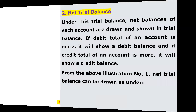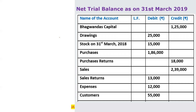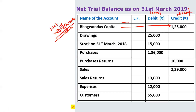In the net trial balance, Bhagwan Das's Capital is 1,25,000 — that is the difference between debit and credit. Net means the difference between debit and credit. For purchases: debit is 1,90,000 and credit is 4,000, so the net is 1,86,000, which goes on the debit side since debit is greater.